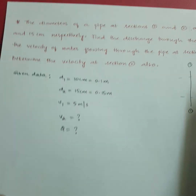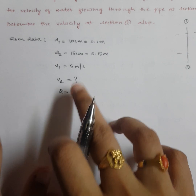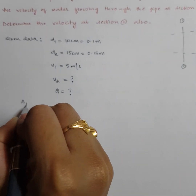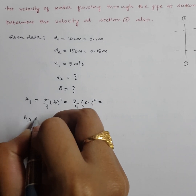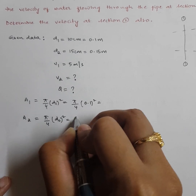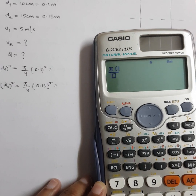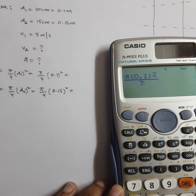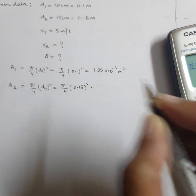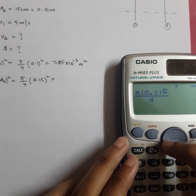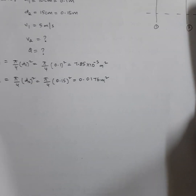The discharge formula is Q equals A times V, so we can use either A1 V1 or A2 V2. First, calculate the areas: A1 equals pi over 4 times D1 squared equals pi over 4 times 0.1 squared, which gives 7.85 times 10 to the power of negative 3 square meters. A2 equals pi over 4 times 0.15 squared, which gives 0.0176 square meters.